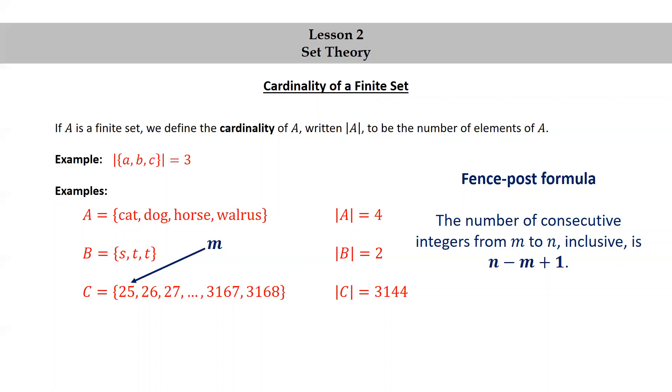Remember the word inclusive means including m and n. So here m is the first element of the set, 25, and n is the last element, 3,168. And so we get 3,168 minus 25 plus one equals 3,144.